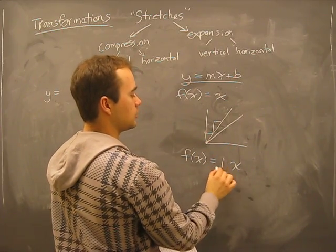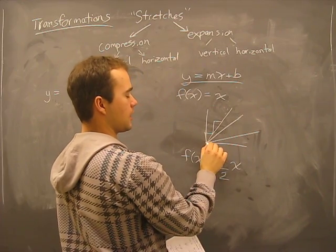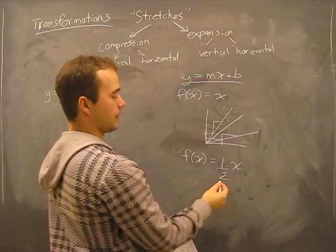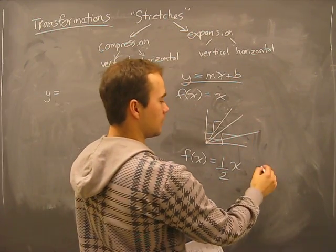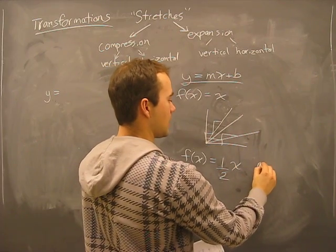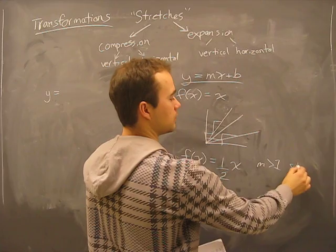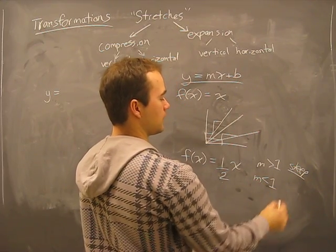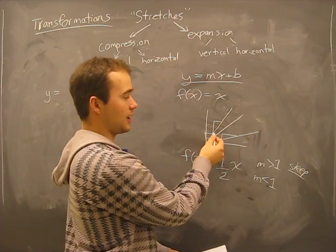If this decreases to be smaller than 1, the slope is smaller. A rise of 1 and a run of 2. So just common sense tells us that if m is greater than 1, then it gets steeper. If m is less than 1, it gets less steep than this.